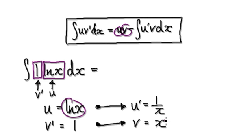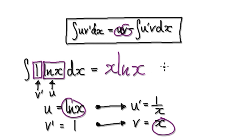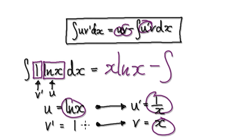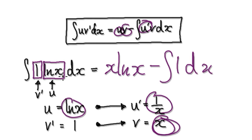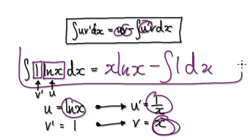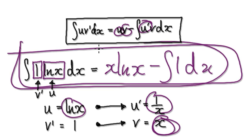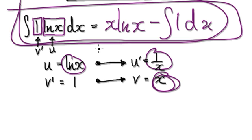With u times v, we would do this. Here would be our old method, and then here it would be u prime times v, so that would be one. This is our old method, and doing it this way would then give you this — this should be our final answer using the old method.